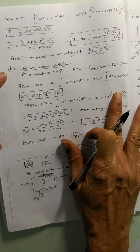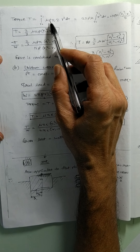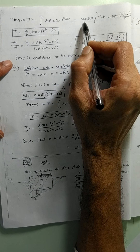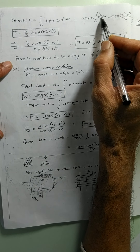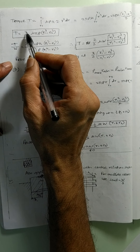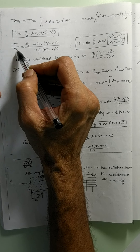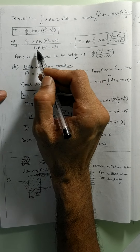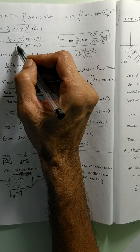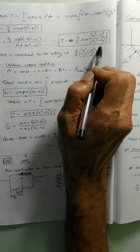Now we move on to the torque. For the torque, the formula derived earlier is T equals integration of mu P 2 pi R squared dr from R1 to R2. So mu, P, 2 pi come out of the integration sign and inside is R squared. Integration of R squared from R1 to R2 gives (R1 cubed minus R2 cubed) over 3. When simplified it becomes T equals (2/3) mu pi P (R1 cubed minus R2 cubed). Now dividing T by W and simplifying — pi and P cancel — giving T equals (2/3) mu W (R1 cubed minus R2 cubed) / (R1 squared minus R2 squared). That is the final expression for T in terms of W.